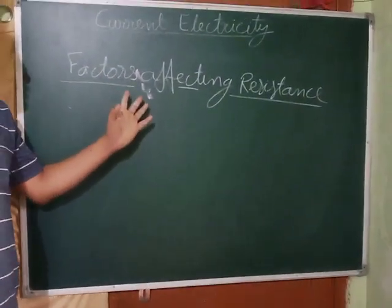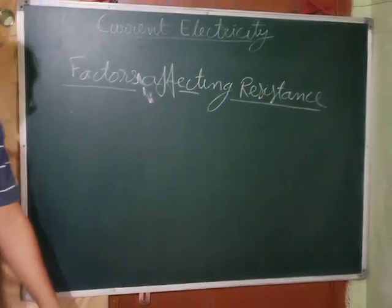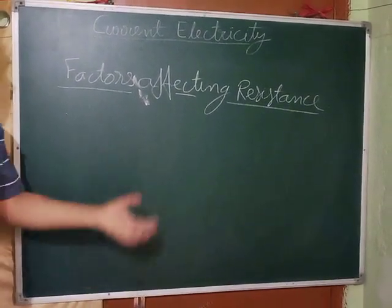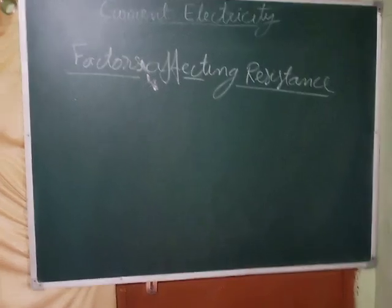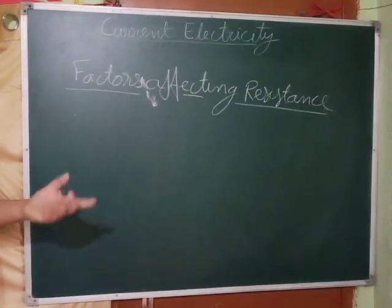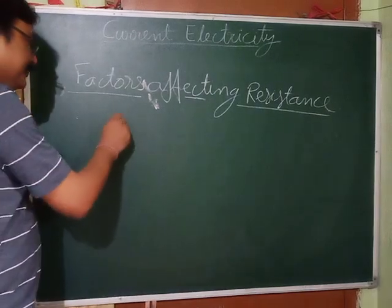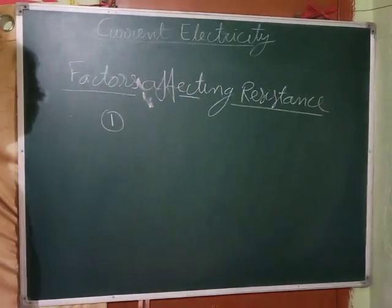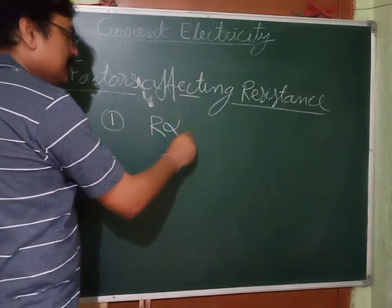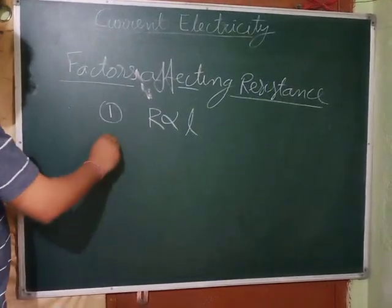Next: factors affecting resistance. Resistance is directly proportional to the length of the conductor, and inversely proportional to the area of cross section.